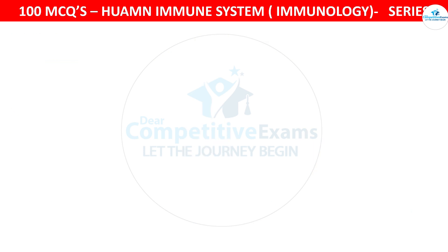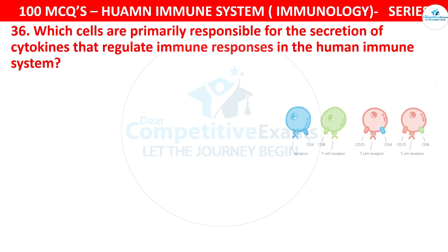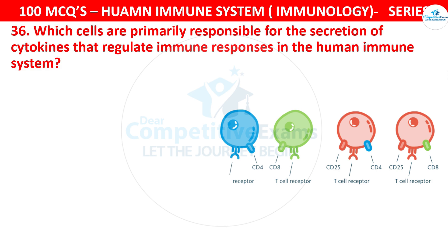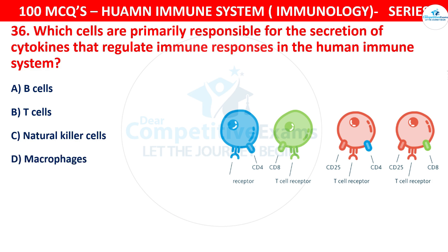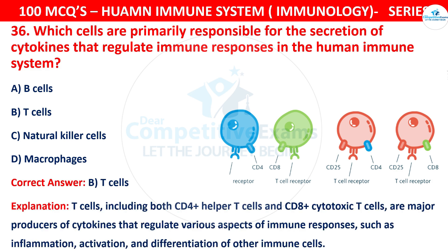Question 36: Which cells are primarily responsible for the secretion of cytokines that regulate immune responses in the human immune system? The options are B cells, T cells, Natural killer cells, or Macrophages. The correct answer is B, that is T cells. T cells — including both CD4+ helper T cells and CD8+ cytotoxic T cells — are major producers of cytokines that regulate various aspects of immune responses, such as inflammation, activation, and differentiation of other immune cells.